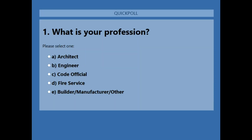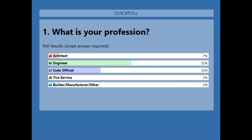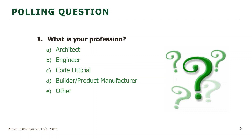We want to know what your profession is. We have 52% engineers, 33% code officials, 7% architects, 5% builders, manufacturers, and other, and 2% fire service. We are delighted that all of you are here and hope that all of you find something to take back to your places of work. It looks like we're a little heavier in engineers in this afternoon session than we were in the morning session.